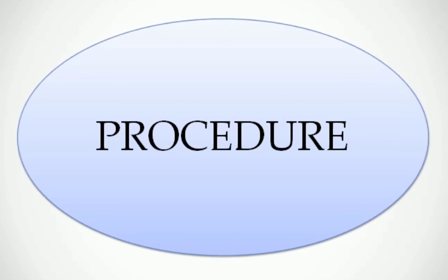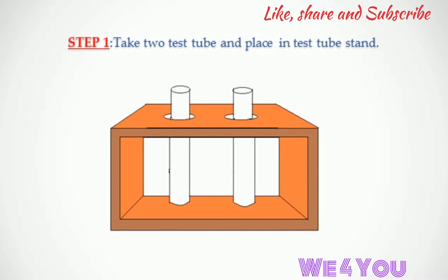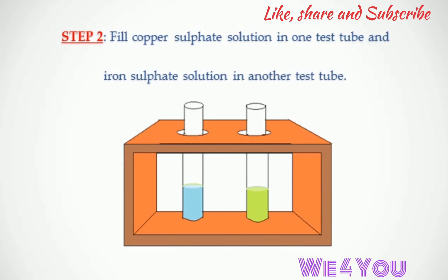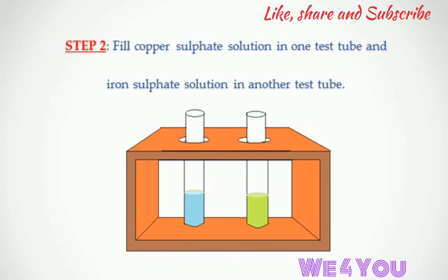Procedure. Step 1: Take two test tubes and place them in the test tube stand. Step 2: Fill copper sulfate solution in one test tube and iron sulfate solution in another. Copper sulfate solution is blue in color and iron sulfate solution is light green in color.